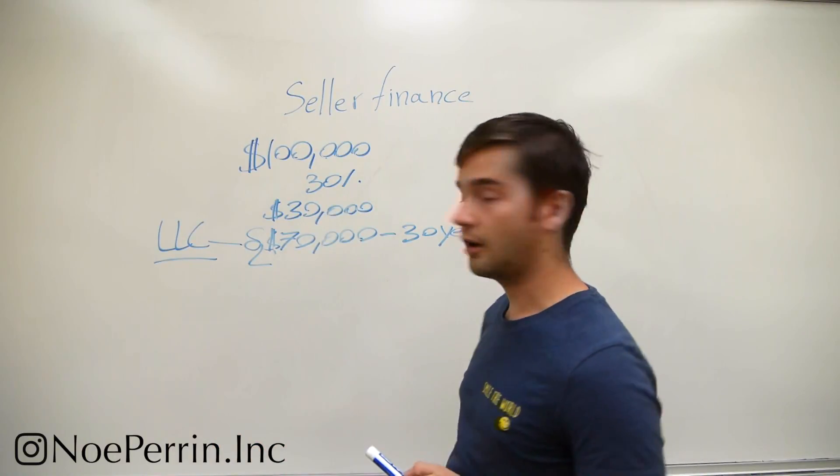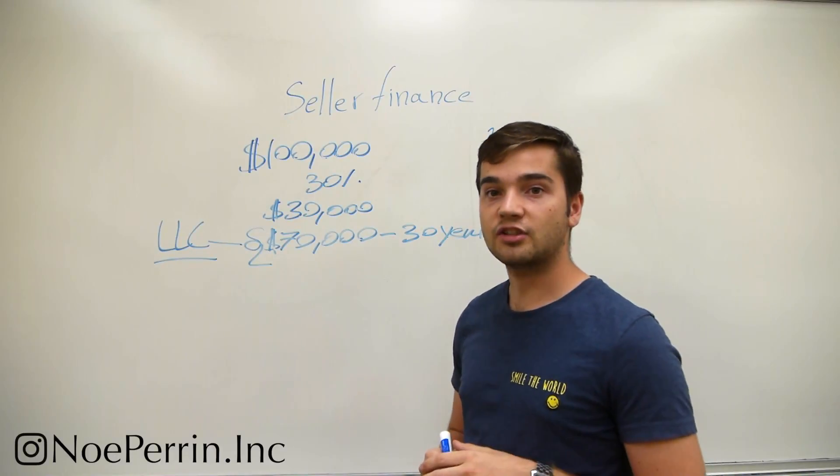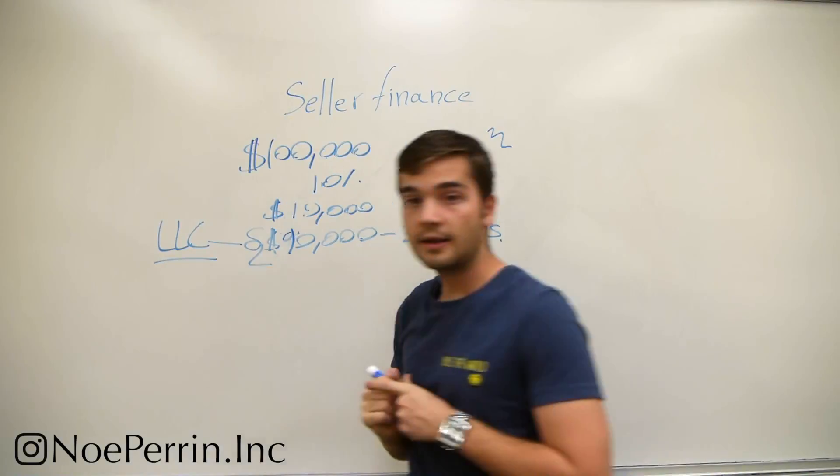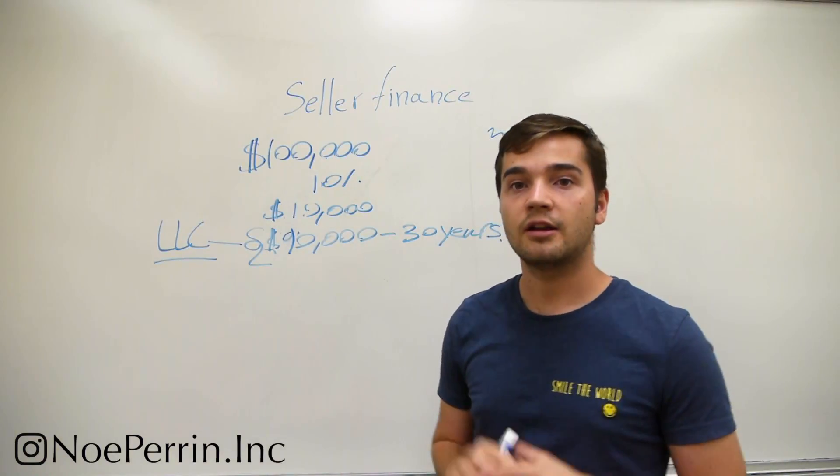Imagine now that instead of taking a 30% down payment, the guy or the girl would actually take a 10% down payment. Now your down payment is going to be $10,000 and your loan balance is going to be $90,000.